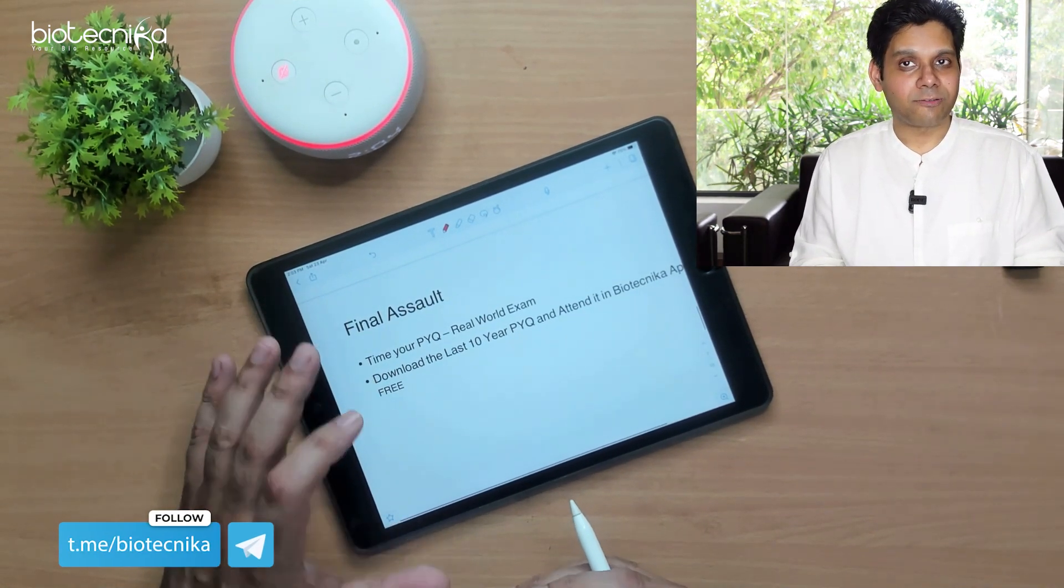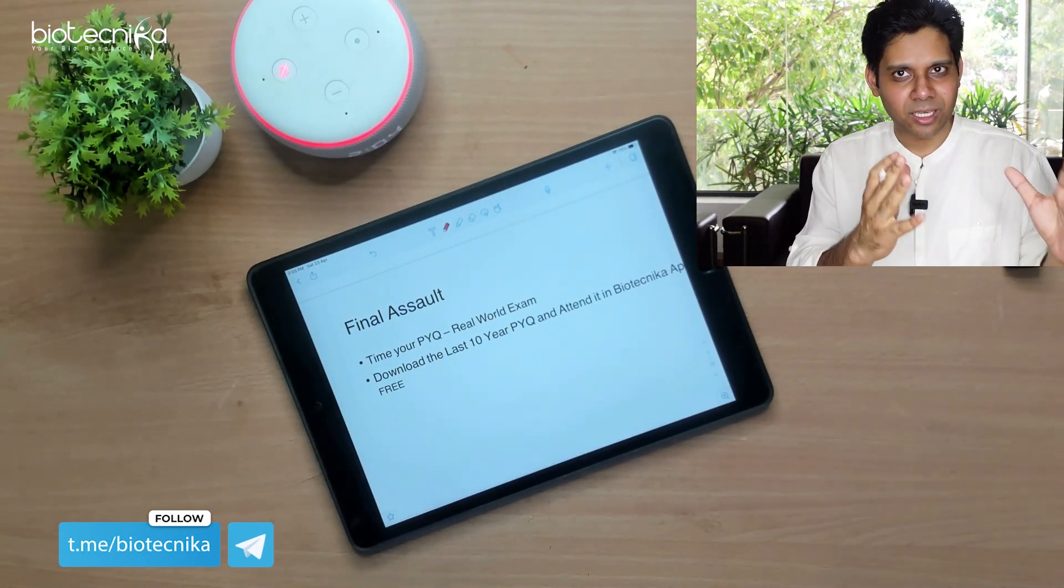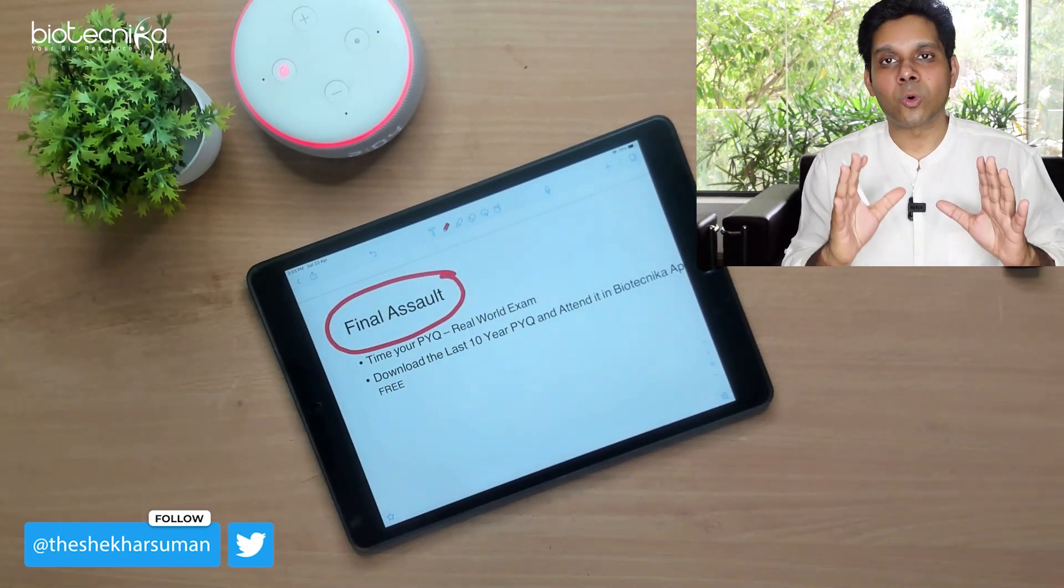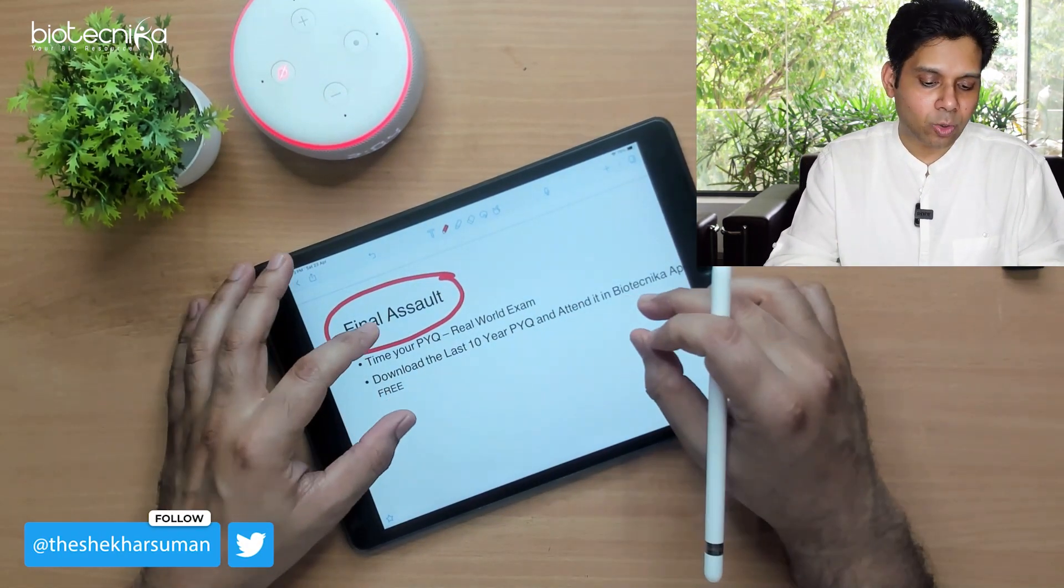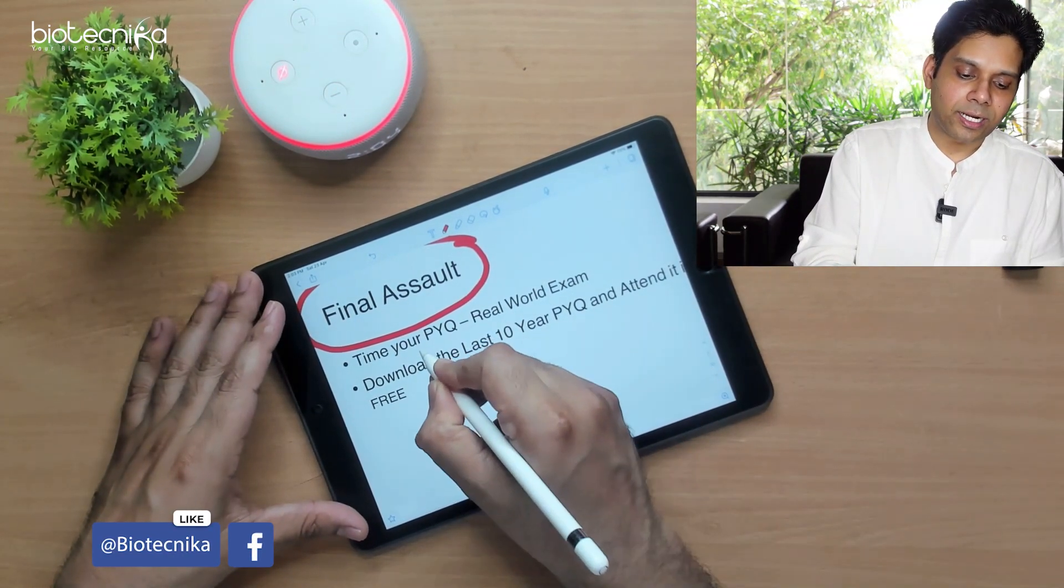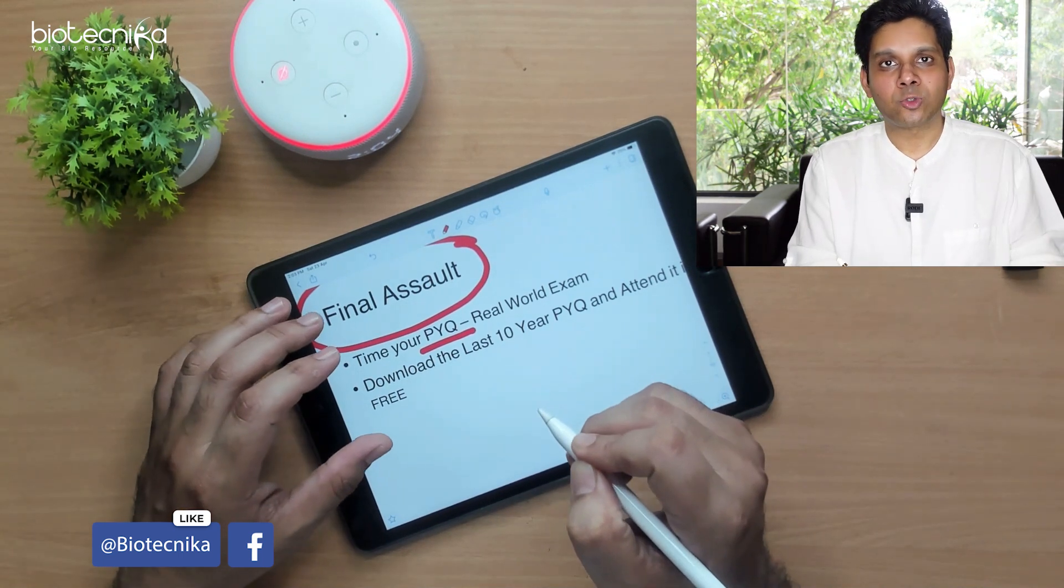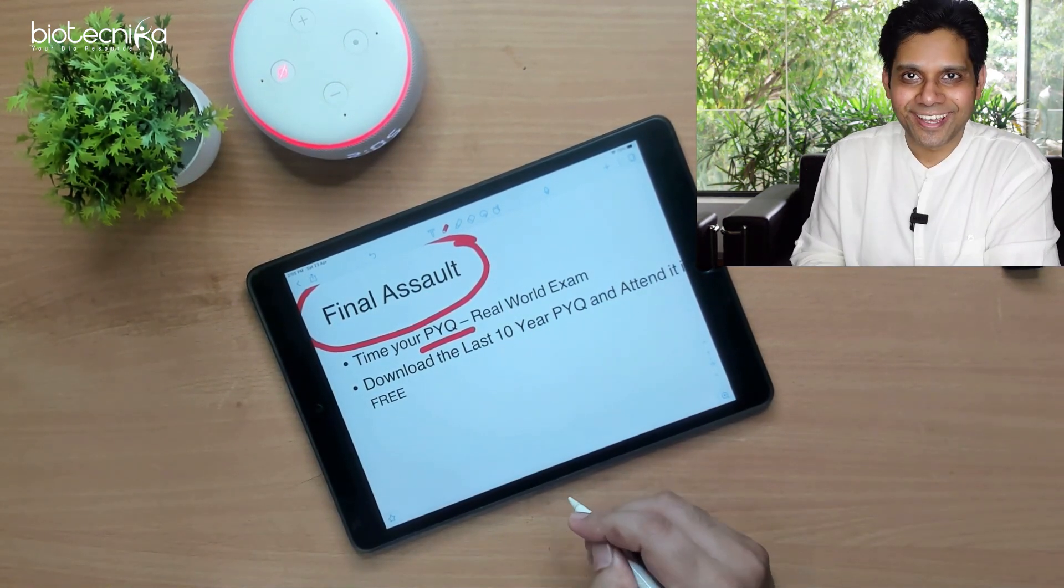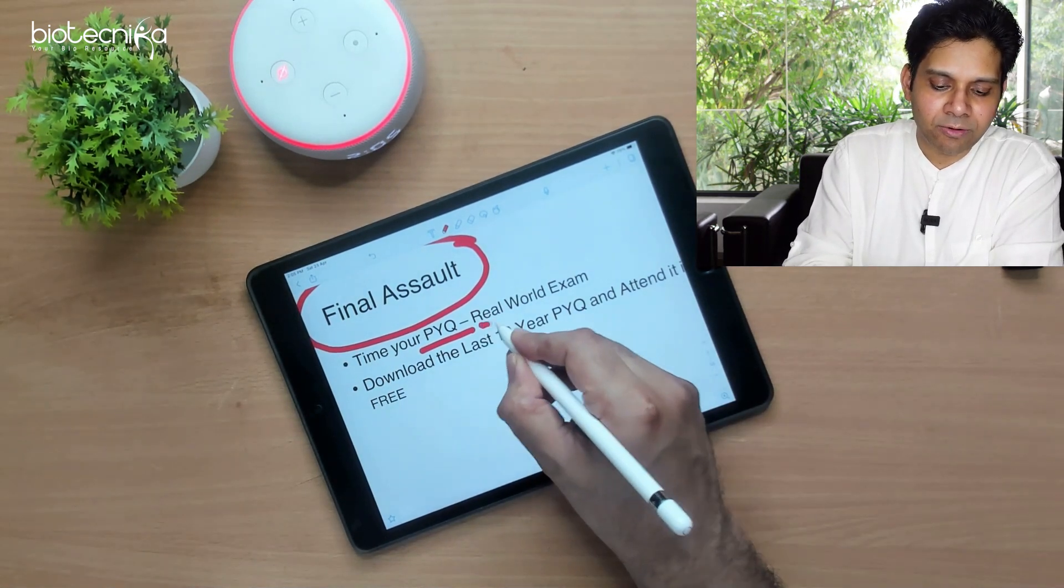Now coming to the final assault, 15 to 20 days before the exam. This is the most important thing: don't panic. There is no need to panic. You have to first know that PYQ's time came in the PDF. I will print it in the description below. You will print it.